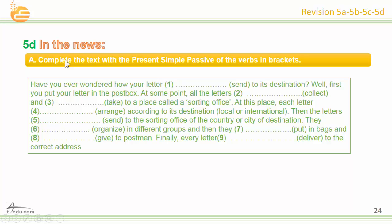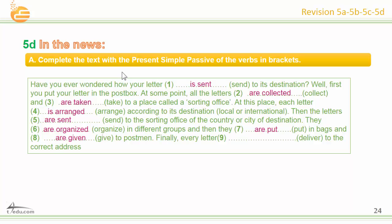5D: In the news. Complete the text with the present simple passive of the verbs in brackets. Number one: is sent. Number two: are collected. Number three: are taken. Number four: is arranged. Number five: are sent. Number six: are organized. Number seven: are put. Number eight: are given. Number nine: are delivered.